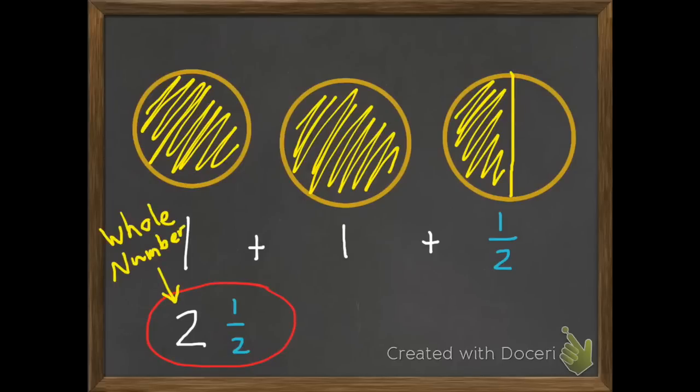So we have a whole number, two wholes plus a fraction part of 1 half, and together that makes a mixed number.